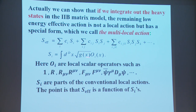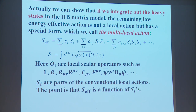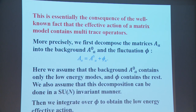We can show that if we integrate out the heavy states in the 2B matrix model, the remaining low energy effective action is not a local action but has a special form which we call a multi-local action. Here S_i is given by integration of √g times local scalar operators O_i such as 1 (giving the volume), R (the Einstein term), R², and so on. S_i is part of the conventional local actions. The key point is that the effective Lagrangian is a function of the S_i's — so it is not local, but not completely non-local either. It is just a function of local actions.